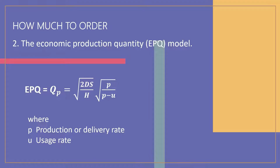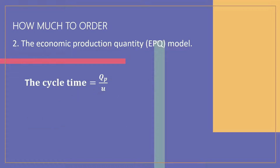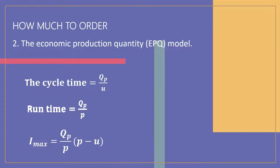Using calculus, the economic production quantity is: Q_p equals the square root of (2 × D × S / H) multiplied by the square root of (p / (p − u)), where p is the production or delivery rate and u is the usage rate. The cycle time — the time between the beginnings of runs — equals Q_p divided by u. The run time, or the production phase of the cycle, equals Q_p divided by p. The maximum inventory I_maximum equals (Q_p / p) × (p − u), and the average inventory I_average equals I_maximum divided by 2.